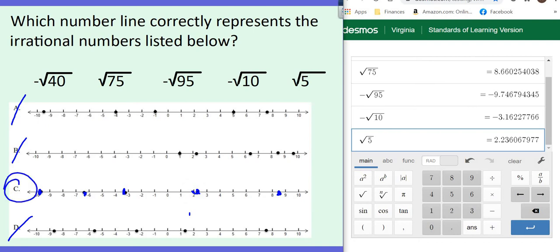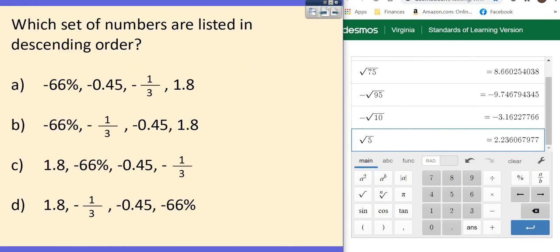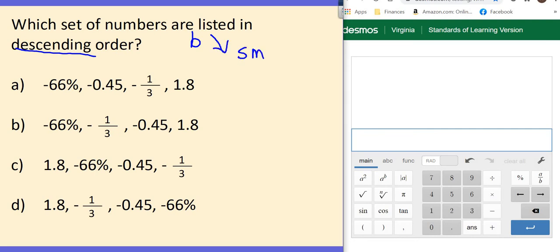So definitely C's our answer. So just take your time. Make sure you look at those negatives and those positives. They make a big difference. Okay? Here we go. Whoops, skipped one. It says, which set of numbers are listed in descending order? That means we're going down. We're starting at big and we're going down to small.